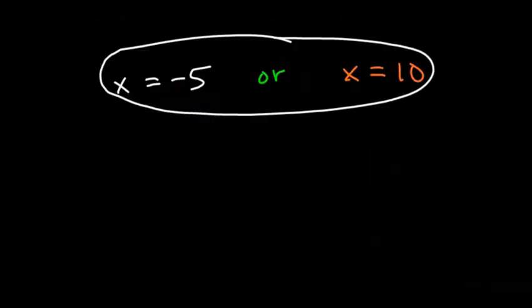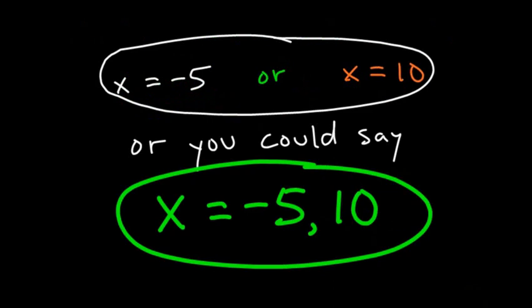Alright. There's another way you might see it, and that is x equals negative five comma ten. That just says the same thing as above, the or. Both are okay.